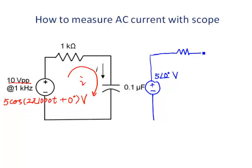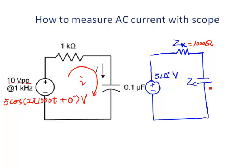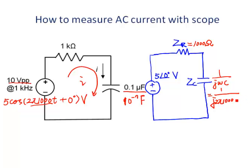The impedance for the resistance — we use Zr to indicate the impedance. Zc is the capacitor impedance. The impedance for the resistor is just the resistance. The impedance of a capacitor is 1 over jωC. That is 1 over j times 2π × 1000 radians per second. The capacitance is 0.1 mF, that is 10⁻⁷ F. We convert everything to standard units.